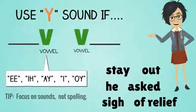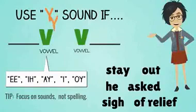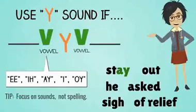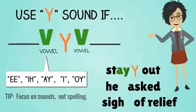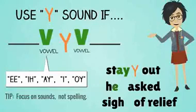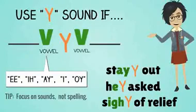If a word ends in the sounds 'ee,' 'ih,' 'ay,' 'eye,' or 'oy,' and the next word begins with a vowel, the two words are linked with a 'yuh' sound. For example, 'stay out' is pronounced like 'stayout.' Linking words with 'yuh' happens even if there isn't a Y in the spelling — 'he asked' is pronounced like 'heyasked.' 'Sigh of relief' is 'sighyof relief.'